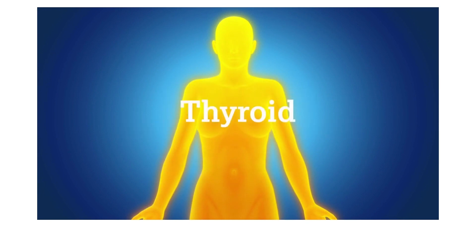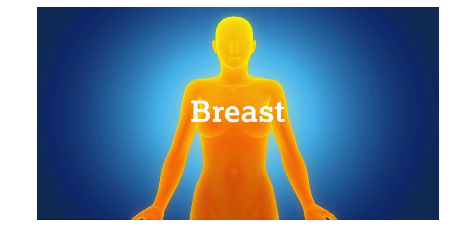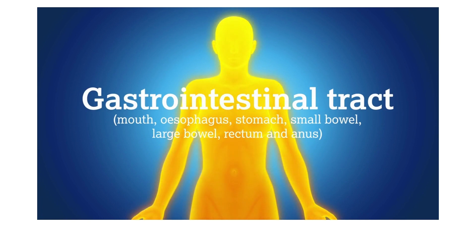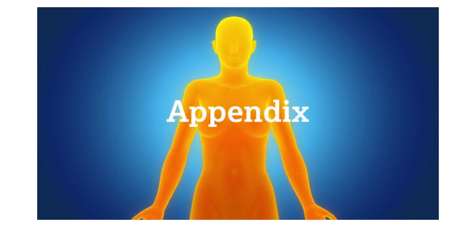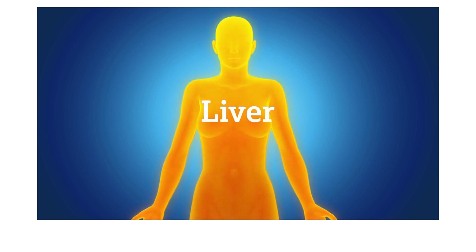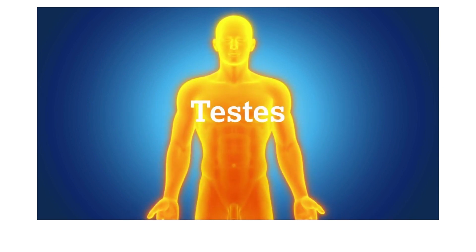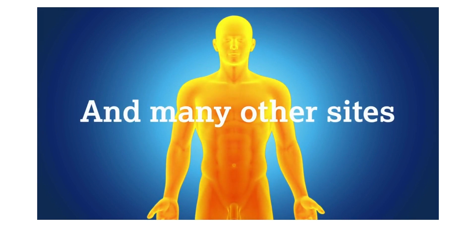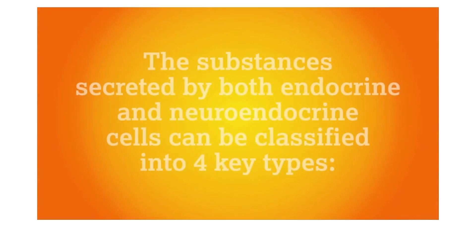Neuroendocrine cells are also found in the thyroid, thymus, breast, gastrointestinal tract including the mouth, esophagus, stomach, small bowel, large bowel, rectum and anus, appendix, pancreas, liver, adrenal glands, ovaries, testes, prostate, skin, and many other sites.